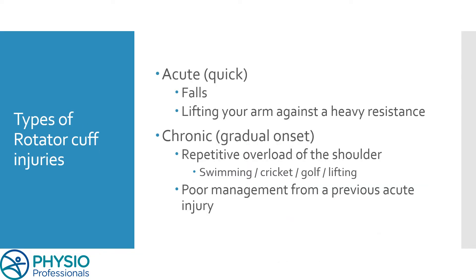There are two types of rotator cuff injuries you can get. You can have an acute one, which is quick, and these require a lot of force to occur — especially in people under the age of 50. The main things we see with these injuries are a fall, whether off a bike, tripping, or slipping and landing on your shoulder, or lifting something really heavy with your arm where that heavy resistance has caused an injury.